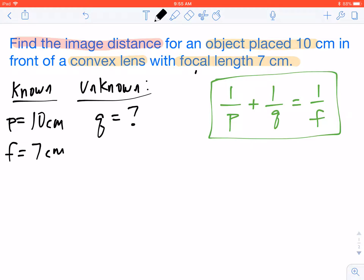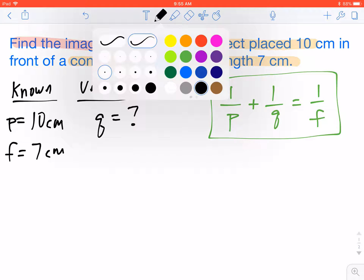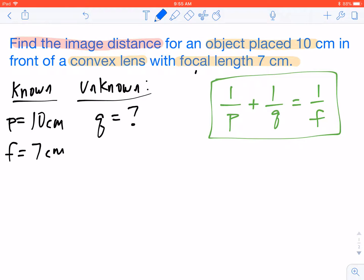We know that it's a convex lens. And we know that the focal point for a convex lens is always positive. So we can leave that 7 centimeters as being positive. Now that we have all of our information, we can just go ahead and plug it into our equation. So that's going to look like this. 1 over 10 plus 1 over q equals 1 over 7.